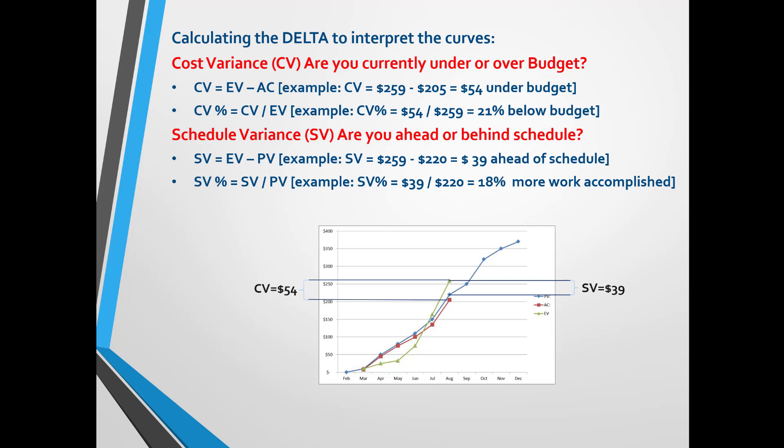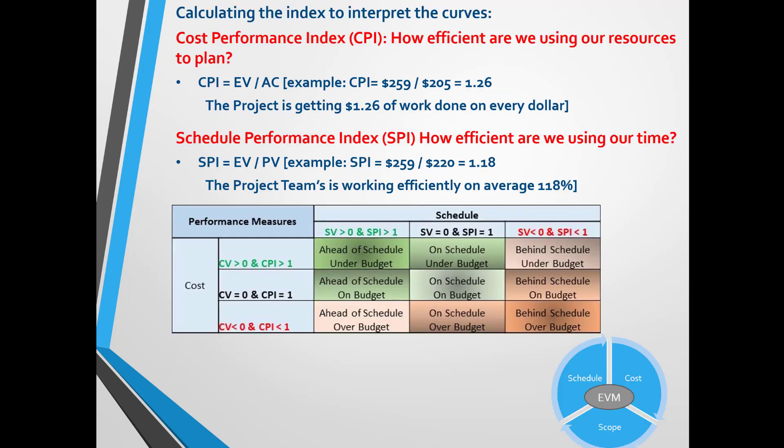Here are the calculations for cost variance and schedule variance. Further calculations answer the questions I went through at the beginning of this video, showing you the efficiency. The table with the performance measures is something a project manager should know when using EVM. If you are just starting to use EVM, you should have the table handy so you can interpret the results and forecast exactly where your project is at.